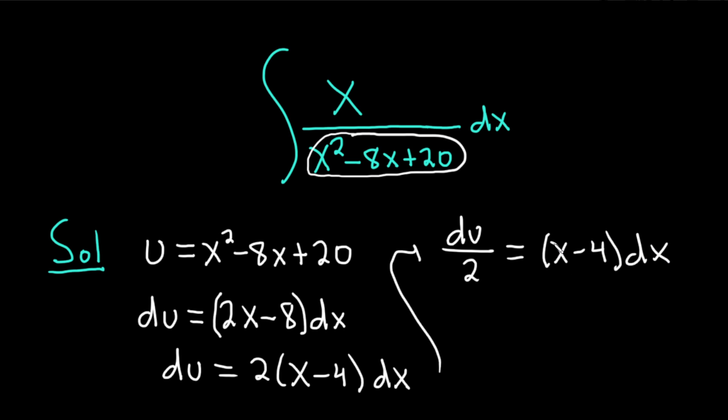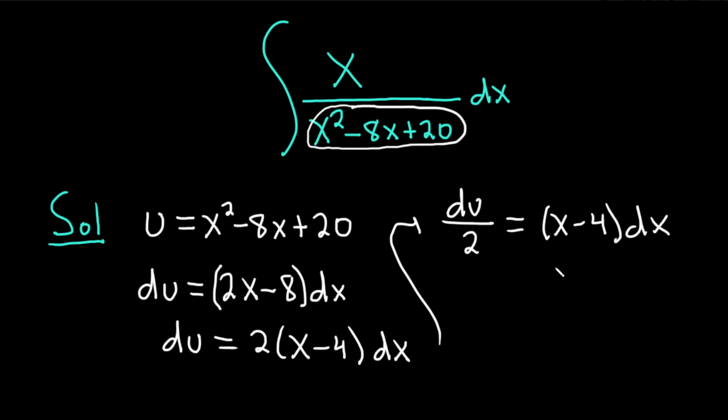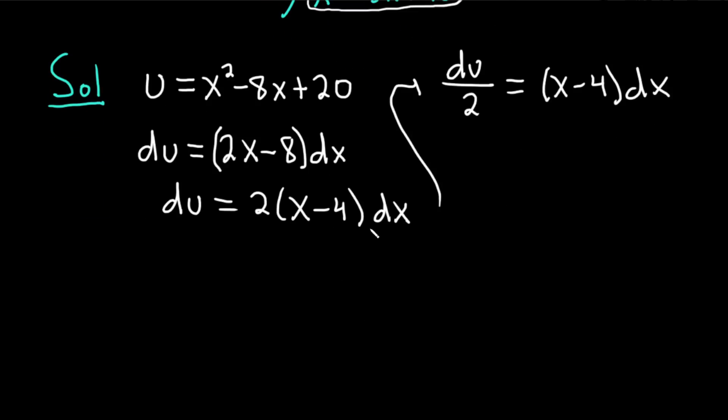This is pretty easy to come up with. We've got an x here, but if we had an x minus 4, things would be really good, because we can just subtract 4 and add 4, and then maybe go from there. But we've got our u, this du over 2, which is x minus 4 dx, is not what we want it to be. So let's go ahead and do some preliminary algebra based off of this substitution and get this to work.